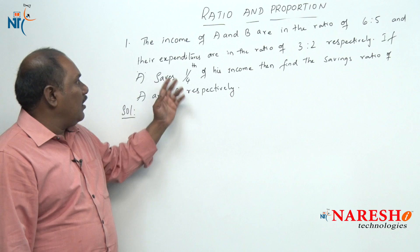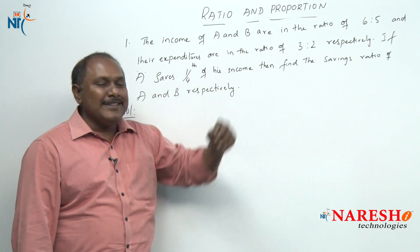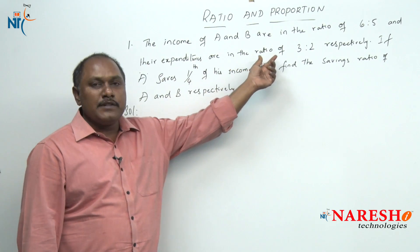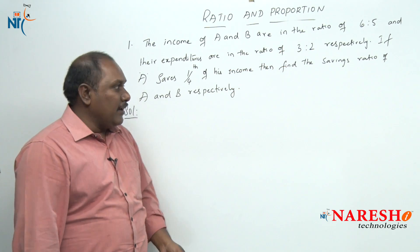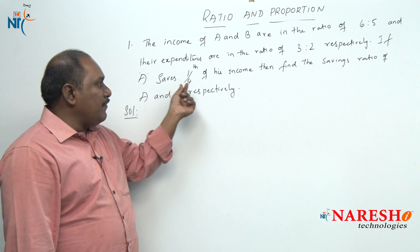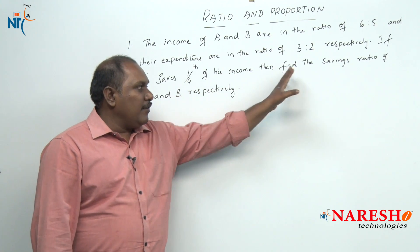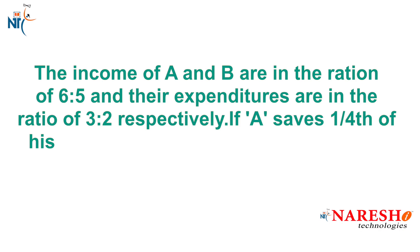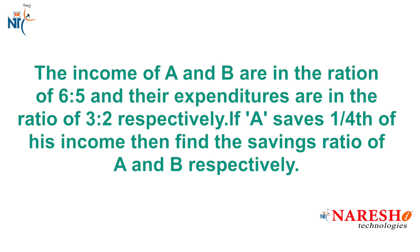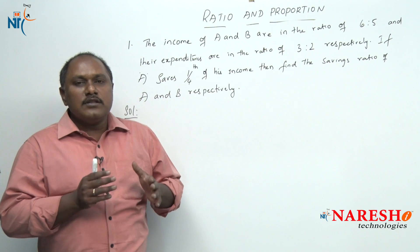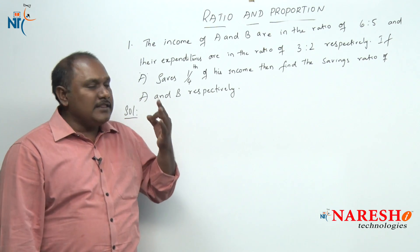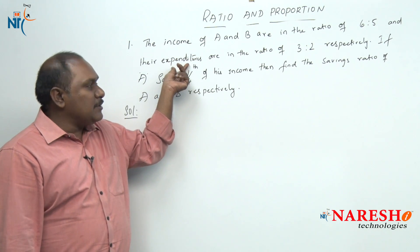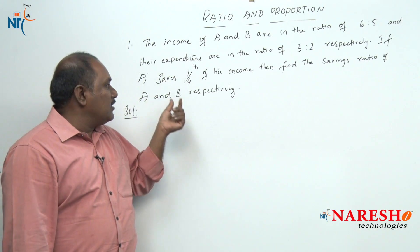The third model: the income of A and B are in the ratio of 6 is to 5 and their expenditures are in the ratio of 3 is to 2 respectively. If A saves one-fourth of his income, then find the savings ratio of A and B respectively. If you look carefully into this question, we have 3 terms: income, expenditure, and savings.